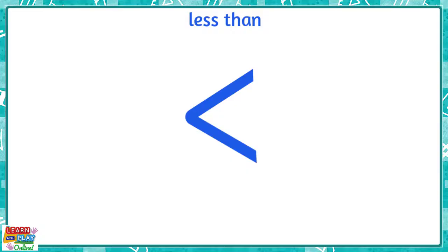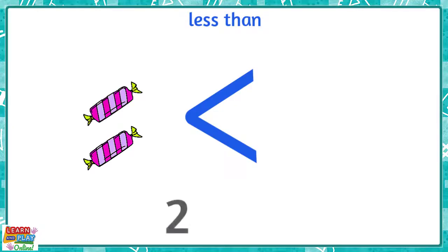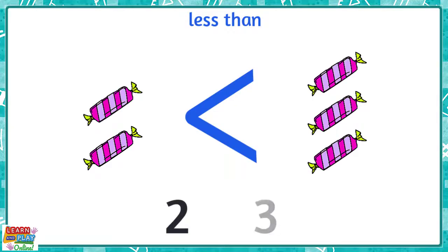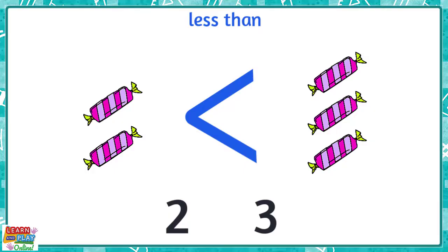For example, if you had two lollies on this side and three lollies on this side, you can see that there are less lollies over here. This means that the number sentence will read two is less than three.